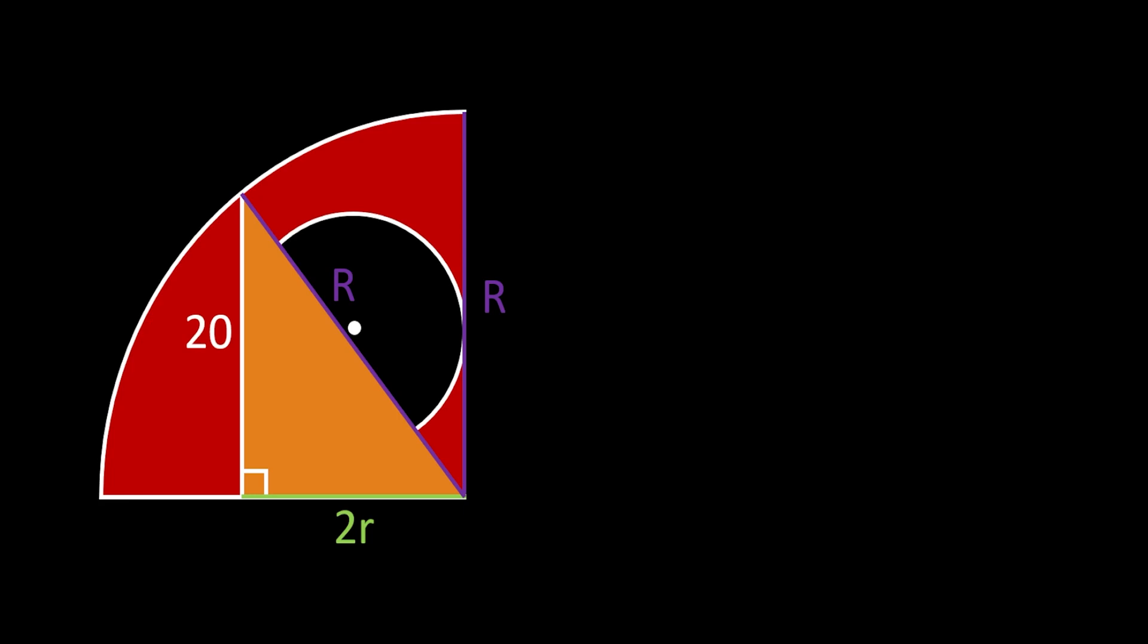Now we can use the Pythagorean theorem which states that big R squared is equal to 20 squared plus 2 small r squared. We can work through this by saying that big R squared is equal to 400 plus 4 small r squared, and if we rewrite this we will get that big R squared minus 4 small r squared is equal to 400.